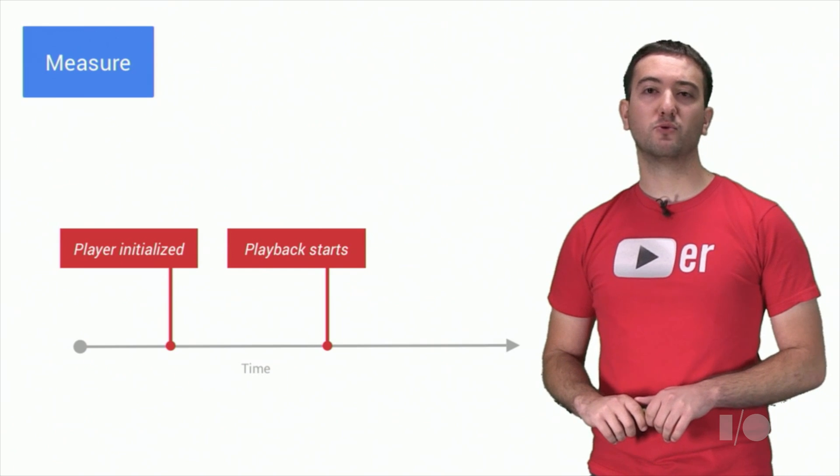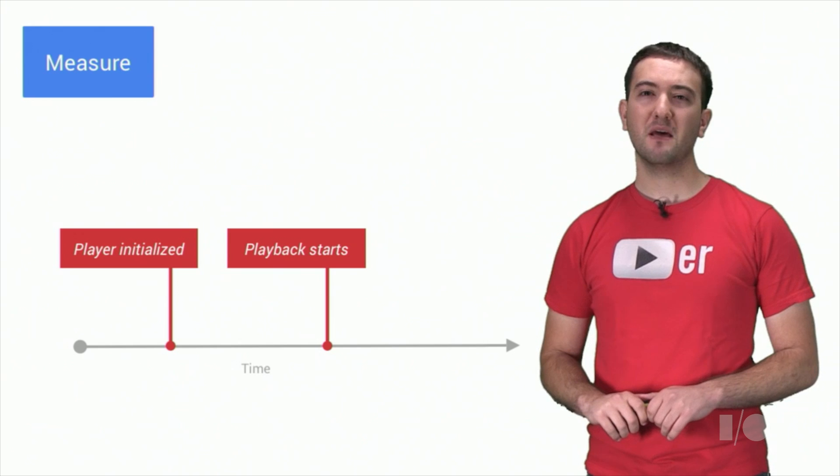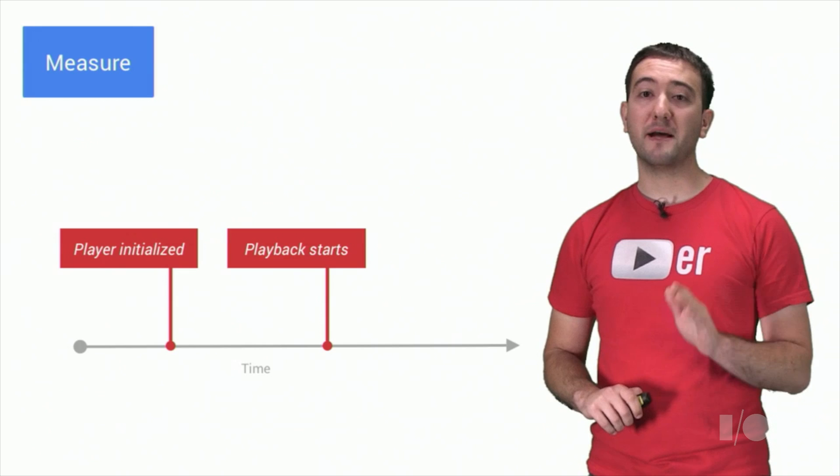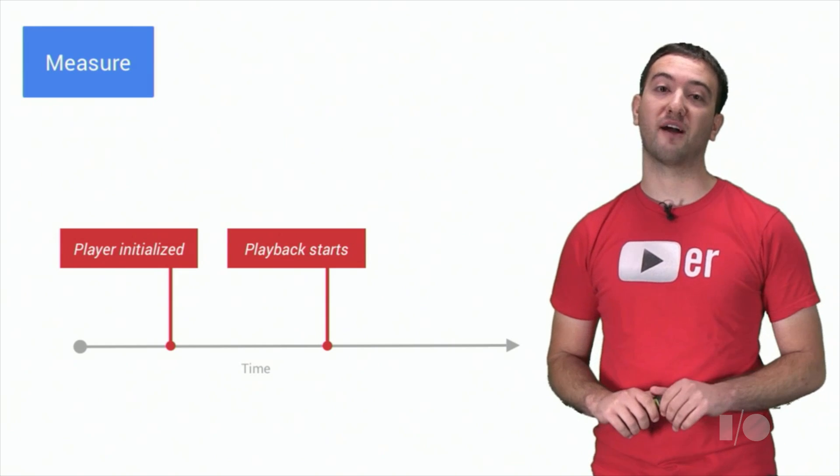Out of the box, most RUM tools measure the general page events published by the Navigation Timing API. But for us, one of the most important performance metrics is how quickly a video plays. The metrics you collect should be customized based on what your application does and what your users are actually waiting for.